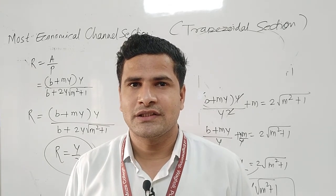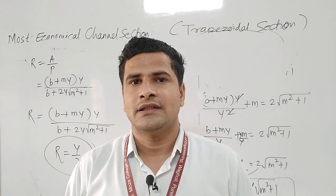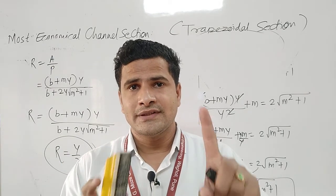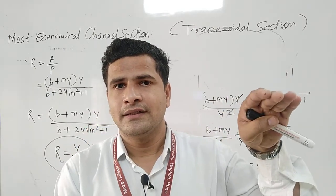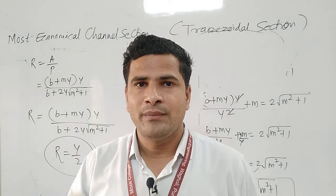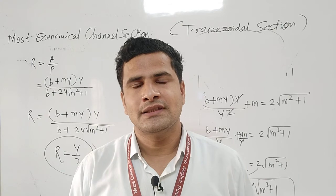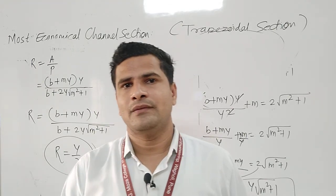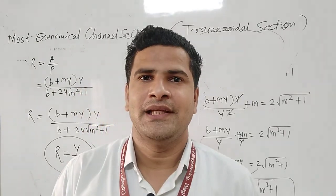Summary: The trapezoidal channel section is the most economical channel section only when — first condition: half of the top width equals one of the sloping sides; and second condition: the hydraulic mean depth R = y/2. The same R condition is also applicable for a rectangular channel section. Thank you and happy learning.